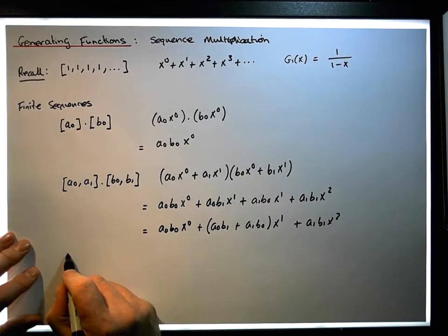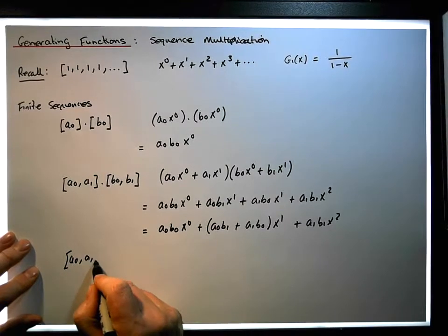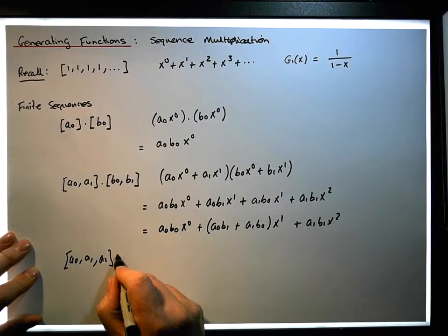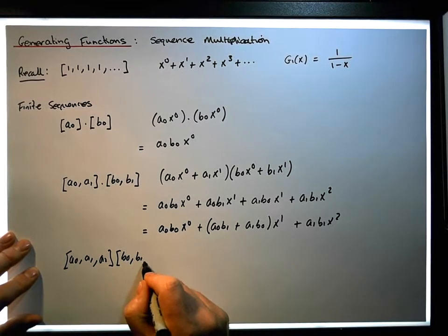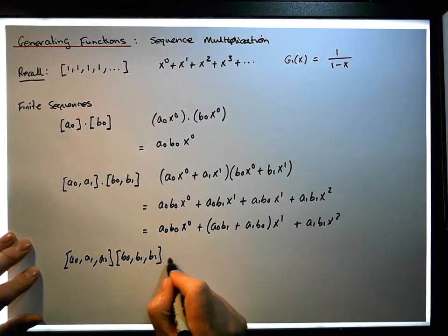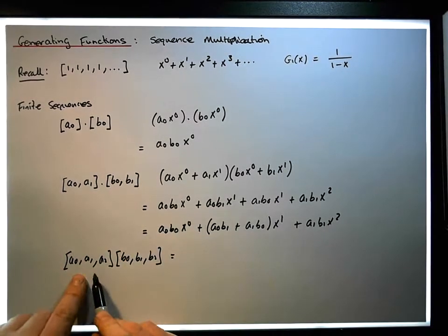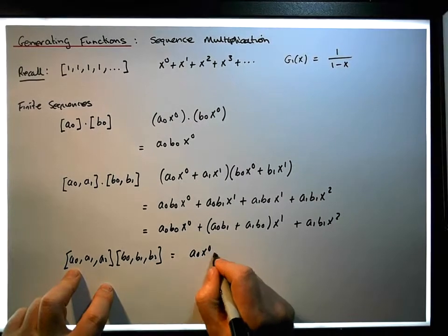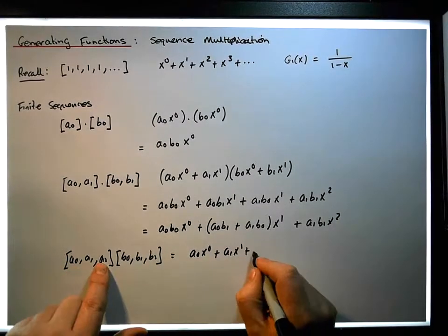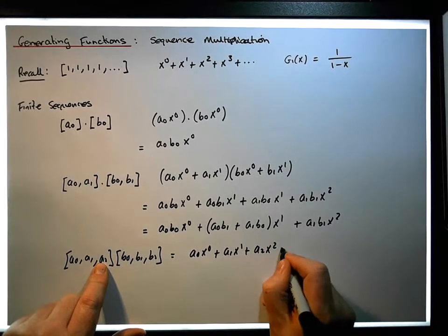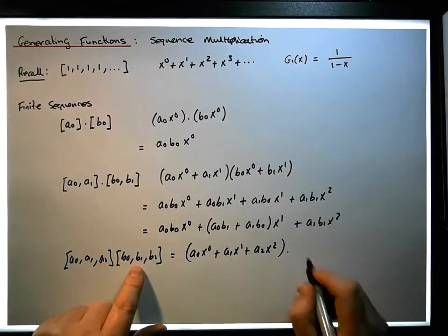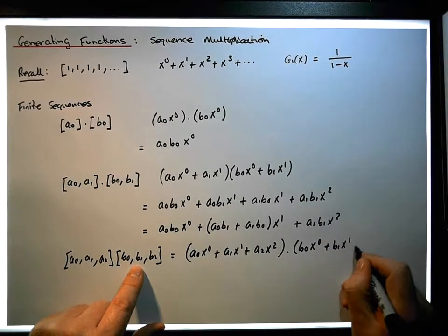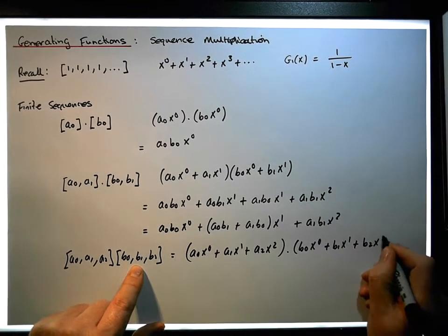Let's do one other product. Let's say we have (a0, a1, a2) multiplied by (b0, b1, b2). When we convert these into power series, this becomes a0 x to the 0 plus a1 x to the 1 plus a2 x squared, multiplied by b0 x to the 0 plus b1 x to the 1 plus b2 x to the 2.